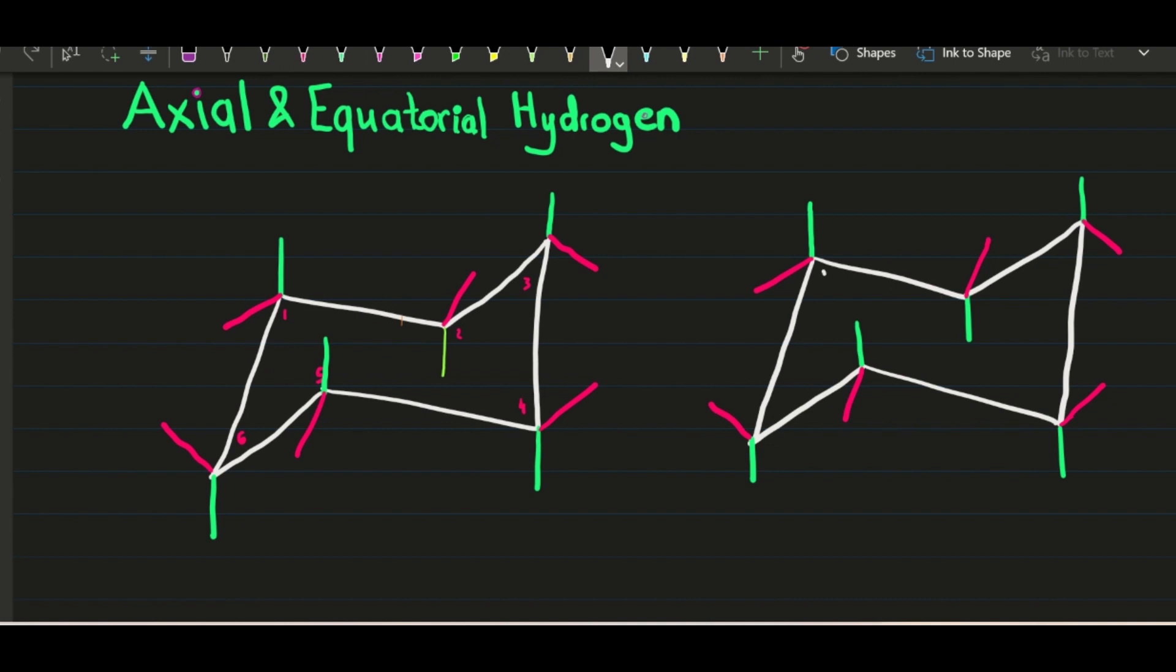So let me number these carbons just for the sake of learning here. All right. So the next thing I want to talk about is that let's say that we have a CH3 here. CH3. If you put CH3 on axial position, the hydrogens from the CH3 are going to have something called diaxial interactions.